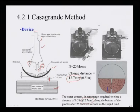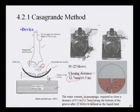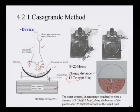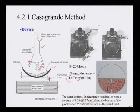You record how many blows are required to achieve the 12.7 mm closing distance for each water content. This procedure is repeated for different water contents (5%, 10%, 15%, 20%): mix soil and water, place in cup, make a groove, operate the handle, and record the number of blows needed to close the groove to 12.7 mm. Then take the soil sample out, dry it, measure water content, and repeat at a higher water content.